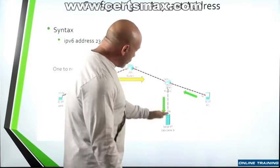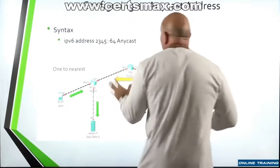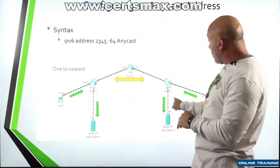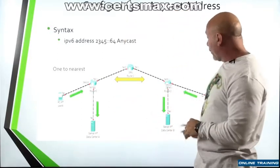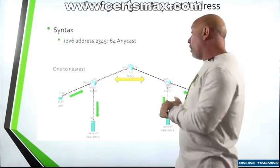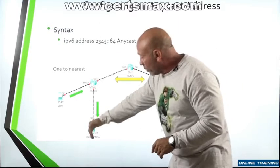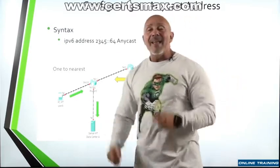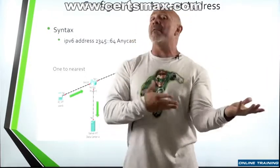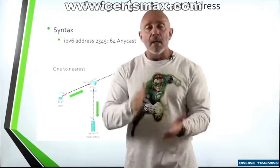The same goes for PC1 — he's going to be pointed in that direction. But if something were to happen, say that connection for PC1 goes down, then anycast will determine that the shortest path is to go all the way to data center A instead. That's what 'one to nearest' means. We talked about it in the old CCNA, and now it's in the book here as well.